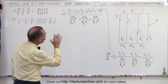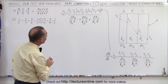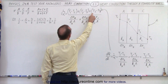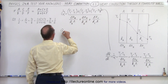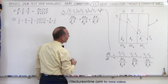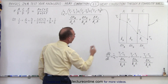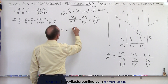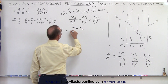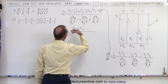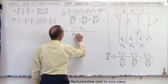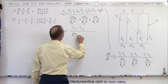Looking at the numerator, notice that the T2's cancel out and the T3's cancel out. So the heat conduction Q-dot through the entire wall — all three sections — will be T1 minus T4 in the numerator, divided by the sum of all the heat resistances of each of the sections.